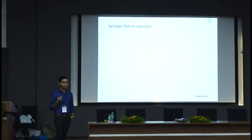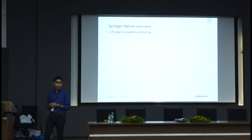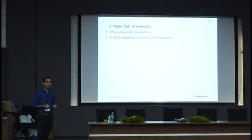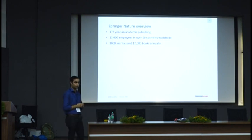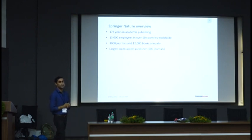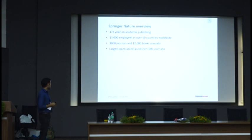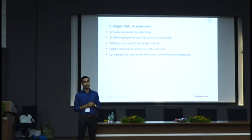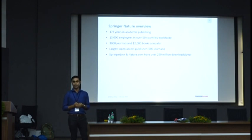Springer itself was founded in 1842 by Julius Springer in Berlin — it's a very old and big company. We have more than 13,000 employees globally. We are the largest academic publisher in the world, publishing annually more than 13,000 books and more than 3,000 journals, of which nearly 600 are open access. Our two online platforms, SpringerLink and Nature.com, cumulatively receive more than 250 million downloads a year. If you publish with Springer Nature, you have a very high probability of being read and cited.